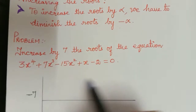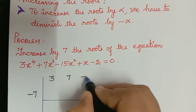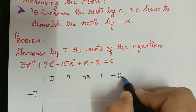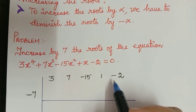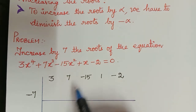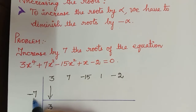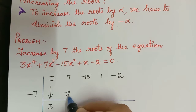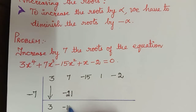We will write the coefficients: 3, 7, negative 15, 1, and negative 2. Now we follow the same synthetic division procedure. This 3 comes down as such. 3 multiplied with negative 7 is negative 21, so we write that here. Then 7 plus negative 21 is negative 14.